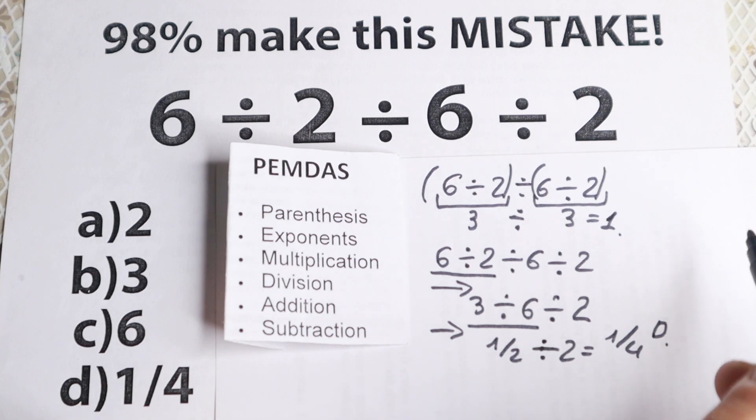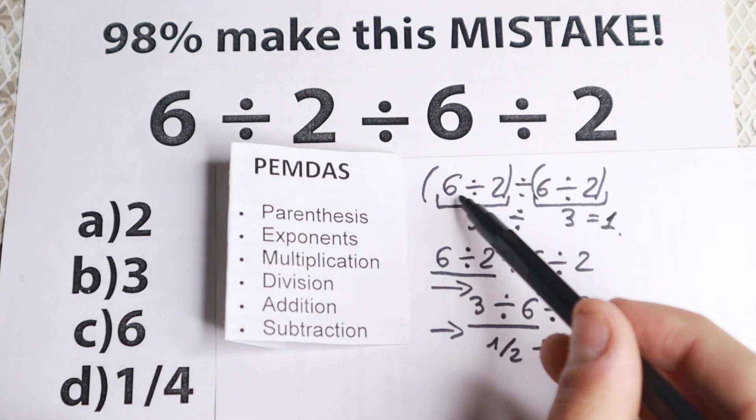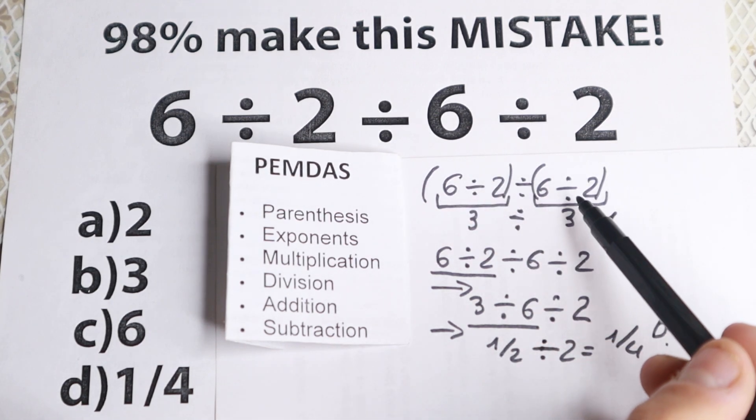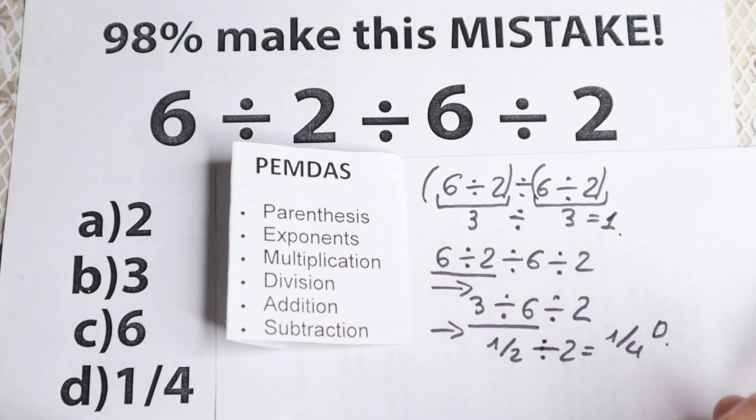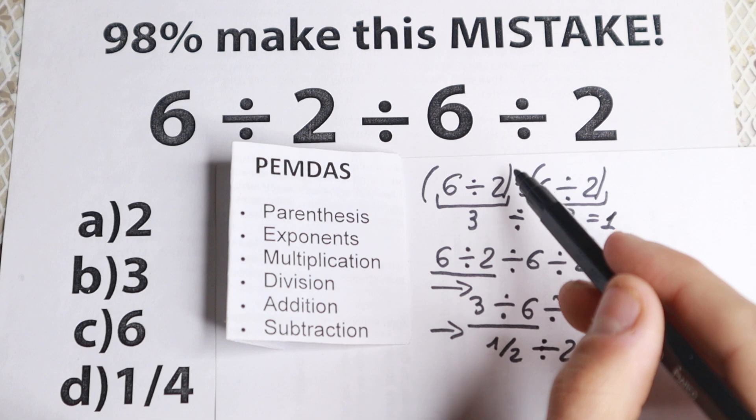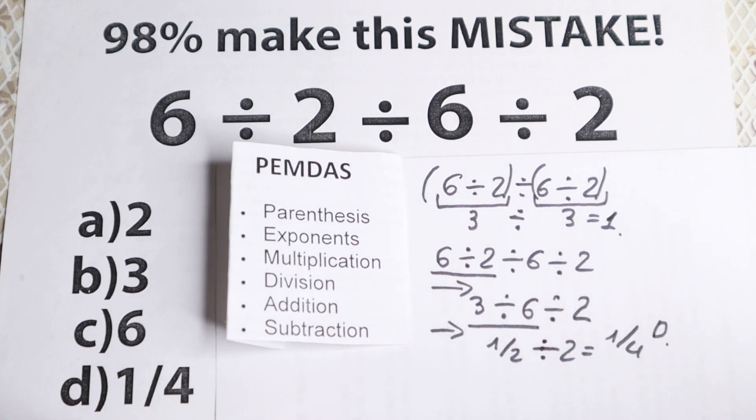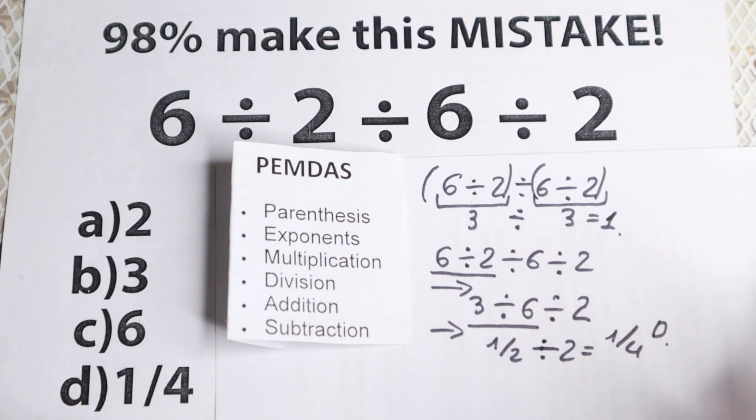Really interesting question, and I see a lot of students do this mistake. They divide 6 divided by 2 at first, and they divide 6 divided by 2 as a second step. But 1 will be the correct answer when you have parentheses. And this is maybe the main thing right here.